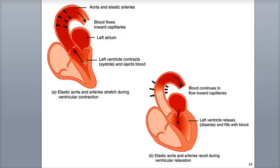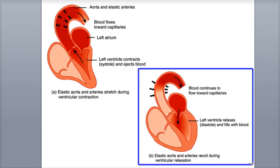When blood is ejected out of the ventricles, it first flows through the elastic arteries, which can handle this high-pressure blood. The walls of these arteries are able to stretch, and their elastic fibers can temporarily store this mechanical energy as potential energy. In this regard, they act as a pressure reservoir. When the elastic fibers recoil, the potential energy is converted into the blood's kinetic energy, helping propel the blood through the arteries after the ventricles have finished contracting.